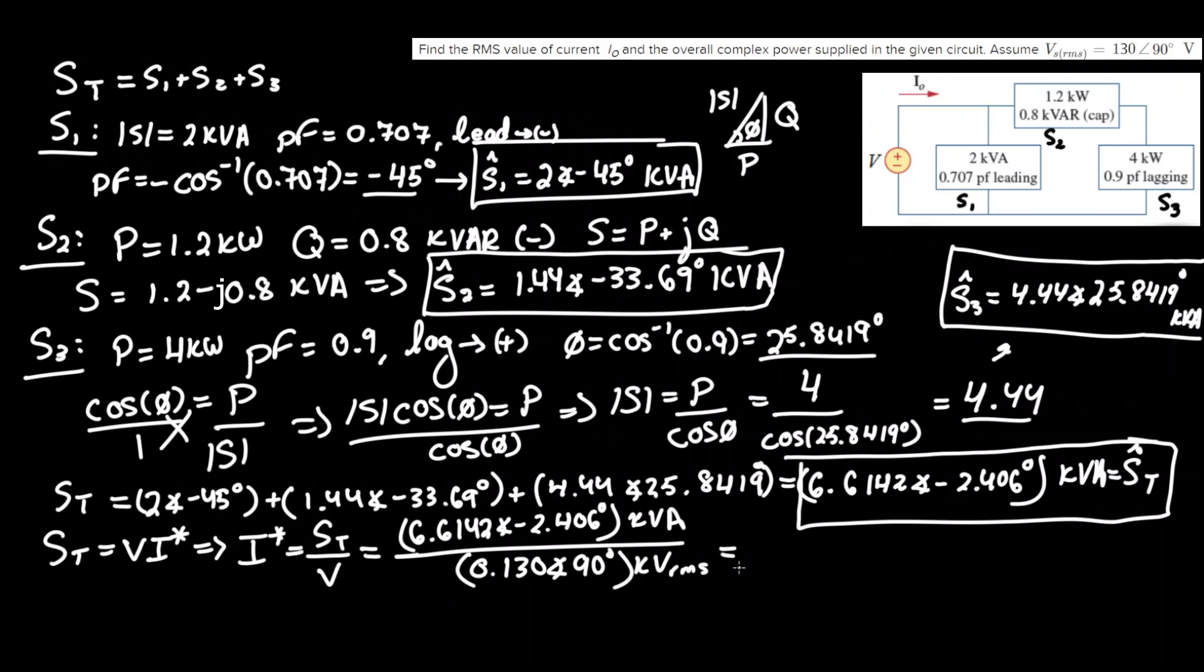So dividing that out we end up with our final answer of around 50.88 angle negative 92.39 degrees, and this time since this is I0 we have this in just normal amps since the kilos cancel each other out, RMS. This is equal to I complex conjugate.